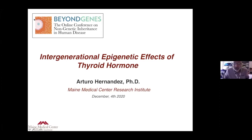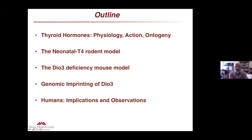I'm not really talking about endocrine disruptors that much. I'm talking about hormones today, and I will be briefly covering some basics about thyroid hormone physiology for those not expert in the field, a little bit about an old model called the neonatal T4 rodent model, our model of DIO3 deficiency and transgenerational effects, and finally the genomic imprinting of DIO3 and the implications and observations in humans.